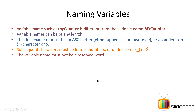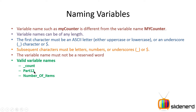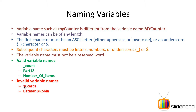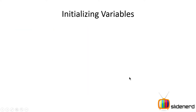The variable name must not be a reserved word. We talked about reserved words in the previous video, so please go back and check it out. What kind of names are valid? Underscore count is a valid variable name because the first character is an underscore. Part12 is a valid name because subsequent letters and numbers are perfectly fine. Number of items is also a valid one. Invalid names include 10cards, because the first character is a number which is not allowed. Batman and Robin is invalid because AND is a special character — only underscore and dollar sign are allowed.